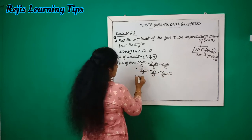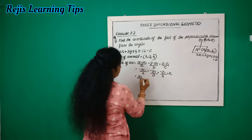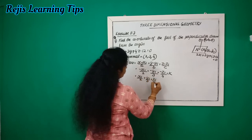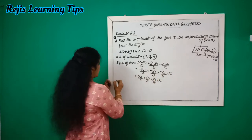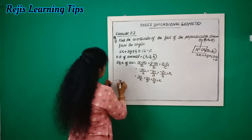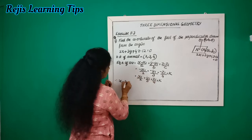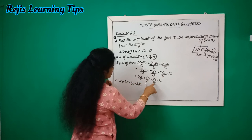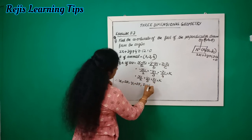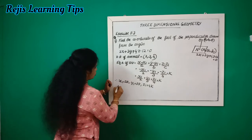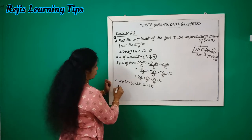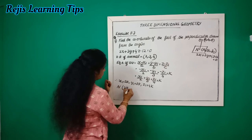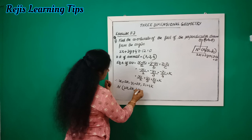Setting each ratio equal to k: x1 by 2 equals k, y1 by 3 equals k, z1 by 4 equals k. Therefore x1 equals 2k, y1 equals 3k, z1 equals 4k. So the coordinates of N, the foot of the perpendicular, are (2k, 3k, 4k).